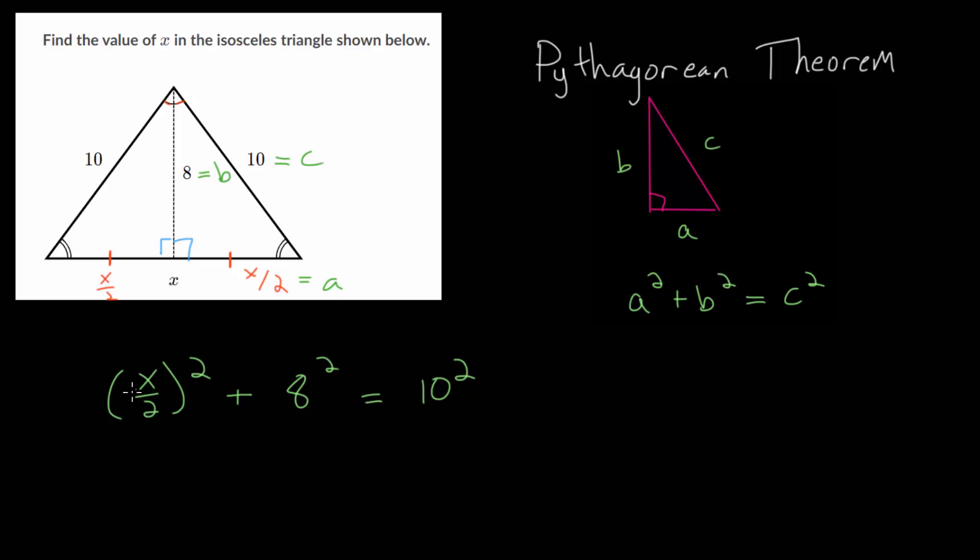Squaring a fraction, remember the top and the bottom, the numerator and denominator, each get squared since essentially this is just x over 2 times x over 2. Then we have 8 squared which is 64 and 10 squared which is 100.